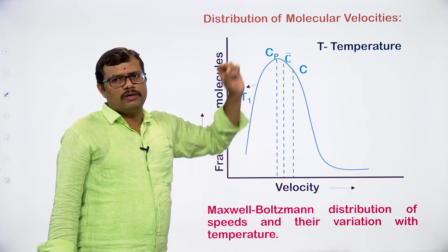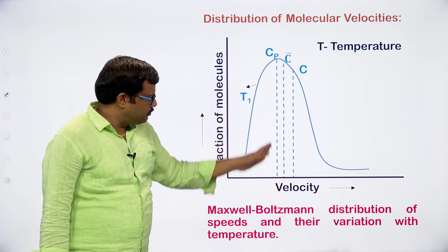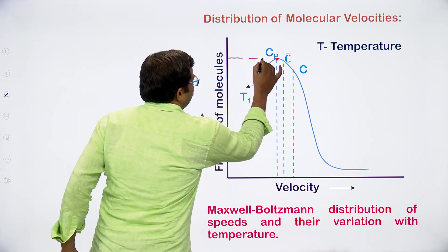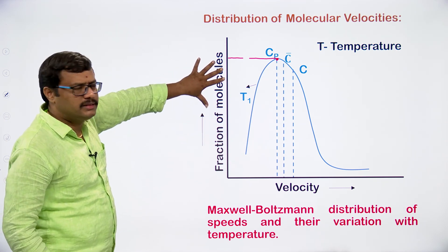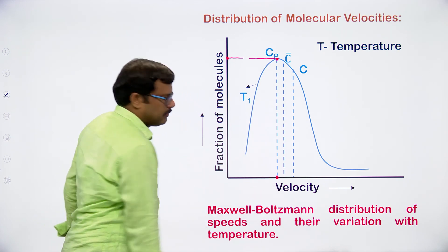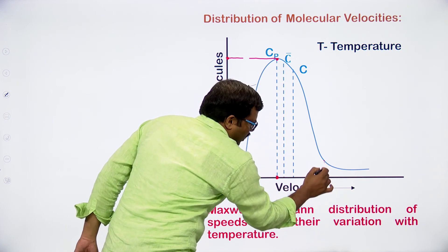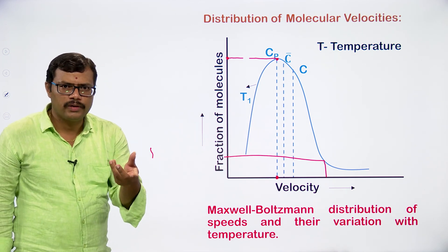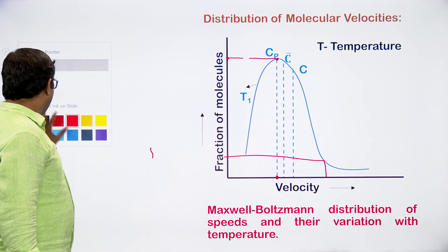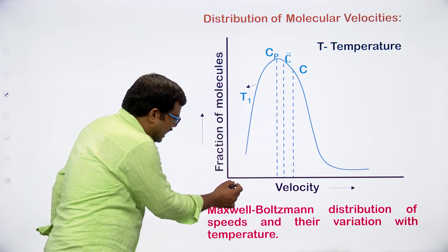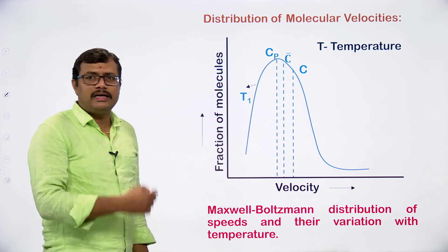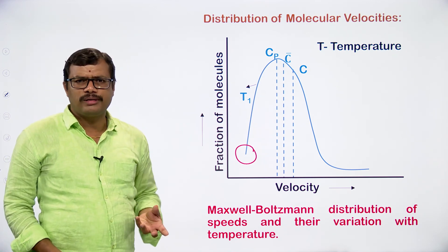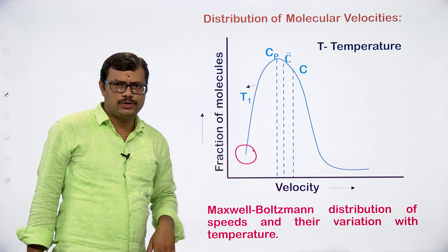Molecular velocities are of three different types: most probable velocity, average velocity, and root mean square velocity — we will discuss those in the next class. Looking at the Maxwell-Boltzmann distribution curve: on the x-axis we have velocity, and on the y-axis we have the fraction of molecules having that velocity. The peak of the curve shows the most probable velocity. Molecules with very high velocity are very few in number. The curve does not touch the x-axis, indicating that no molecule has zero velocity — all molecules will have some velocity and are never stationary.